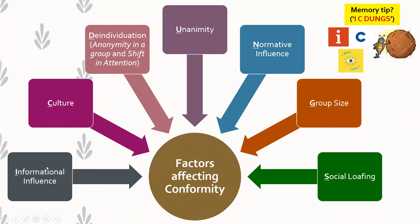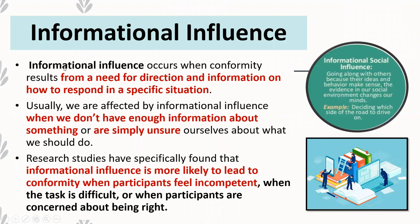The factors affecting conformity — we'll go through these quickly. These are factors that, in addition to what we've already discussed, can also influence our tendency to conform. You can use the memory tip IC DUNGS to remember this: I for informational influence, C for culture, D for de-individuation, U for unanimity, N for normative influence, G for group size, and S for social loafing.